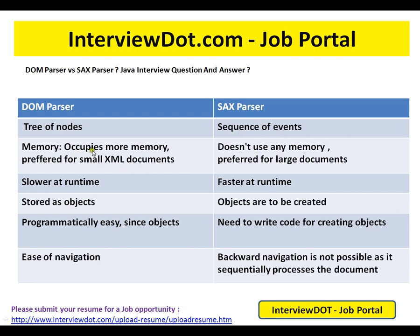DOM parser occupies more memory and is preferred for small documents because it loads the complete document into memory. SAX parser doesn't use as much memory and is preferred for larger documents — it goes node by node. DOM parser is slower at runtime, while SAX parser is faster at runtime. DOM parser stores data as objects directly, whereas with SAX, objects are to be created.